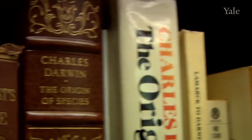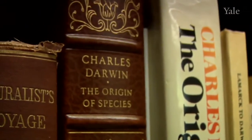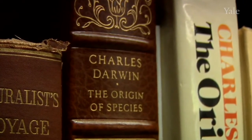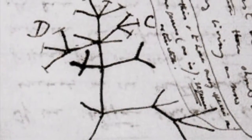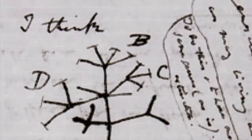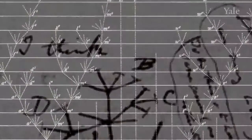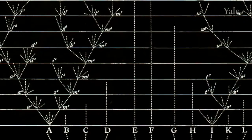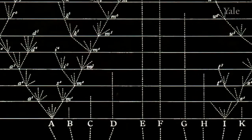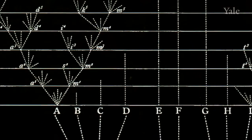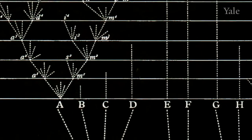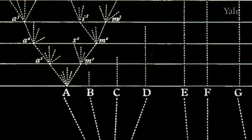In his book The Origin of Species, published in 1859, biologist Charles Darwin compared life on the planet to a great tree. Darwin realized that the process of evolution implied shared ancestry, going all the way back to the beginning of life.